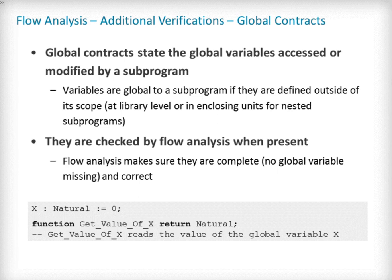Until now, we have seen verifications which do not require any additional annotations from the developer. Flow analysis will also check user-written flow annotations when supplied. In SPARK, it is possible to specify the global and scoped variables accessed or modified by a sub-program, using an ADA 2012-like contract named global. When a global contract is supplied by the user for a sub-program, flow analysis will check that it is correct and complete — that is, no other variable than those stated in the contract are accessed or modified, either directly or through a subsequent sub-program call. For example, we may want to specify that the function GETVALUE_X reads the value of the global variable X and does not access any other global variable.